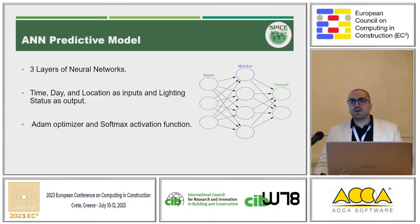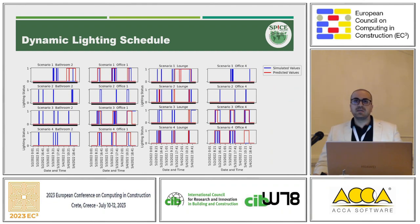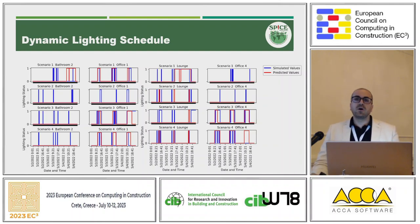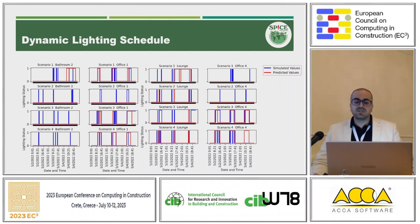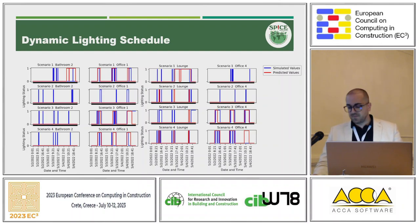We used a Python toolbox to predict the lighting load. These are some example results showing what we got from the simulation versus what the neural network predicted. For the bathrooms, results are not very promising because it's very random when occupants use the bathroom. For the offices, results are more promising — the predicted values are very close to what we obtained from the simulation.